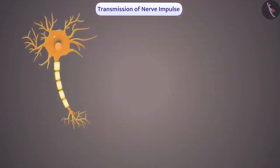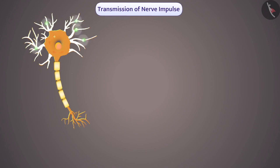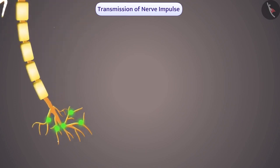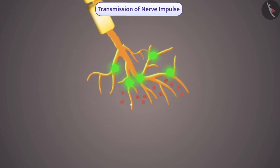Thermoreceptors present in the skin detect temperature. The information detected at the dendritic tip results in a chemical reaction, which creates an electrical impulse. The electrical signal passes through the dendrite to the cell body, then travels through the axon to reach its end.